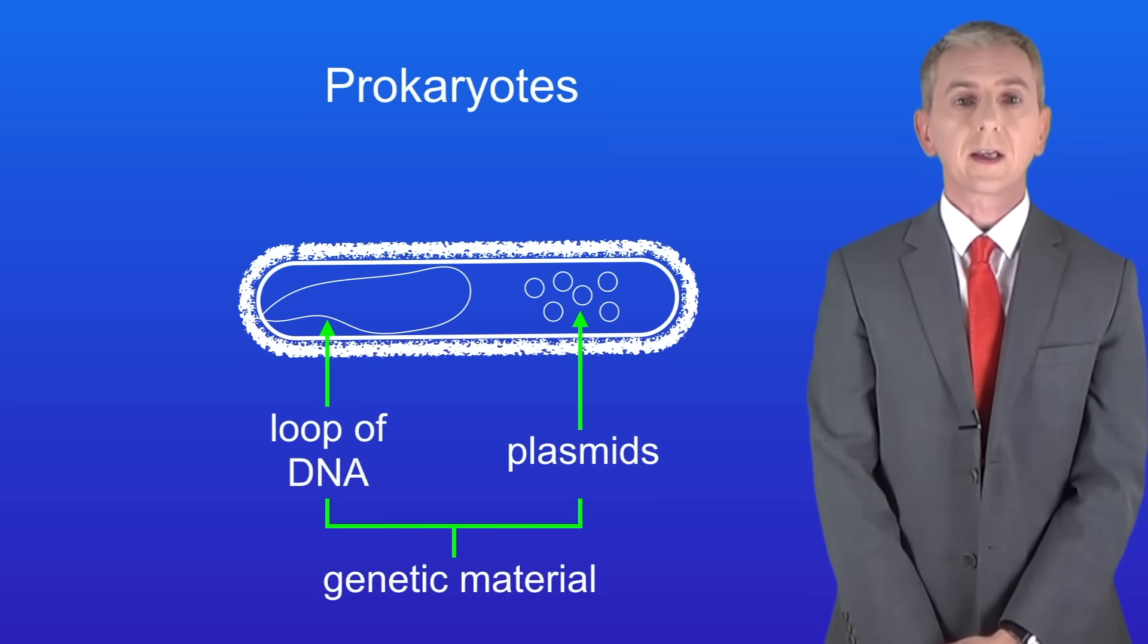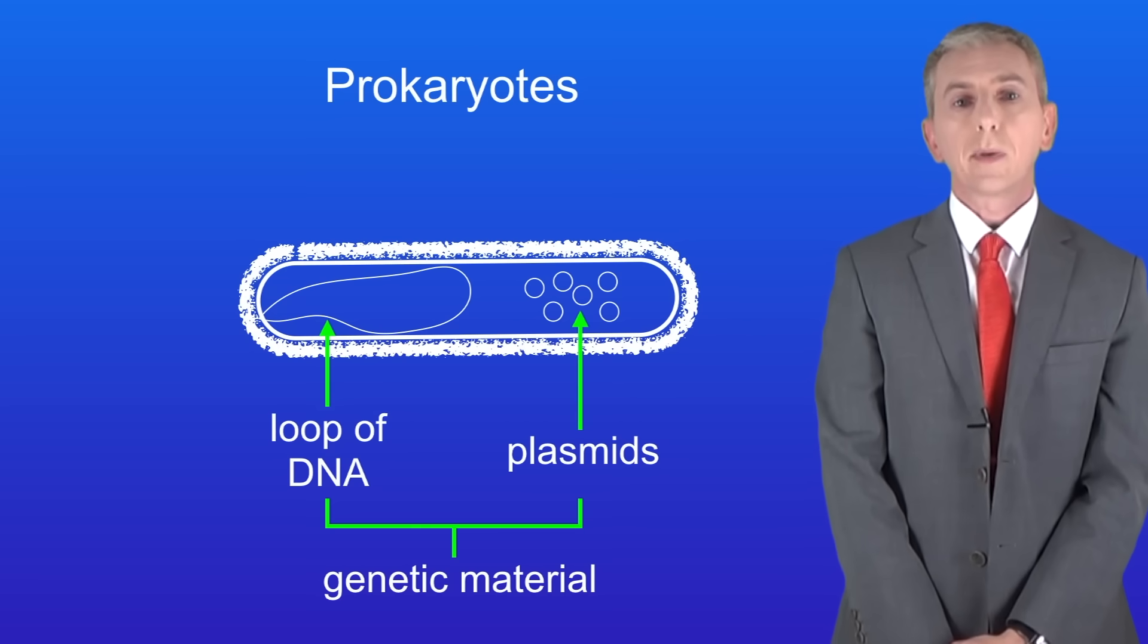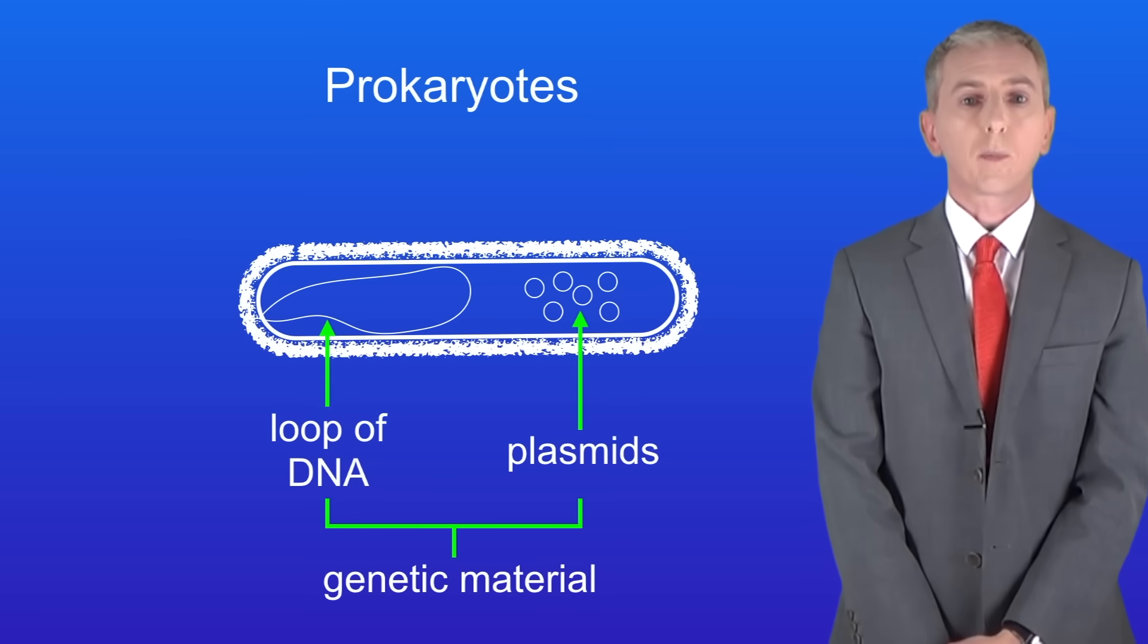Their genetic material consists of a single loop of DNA. Bacteria may also have small rings of DNA called plasmids.